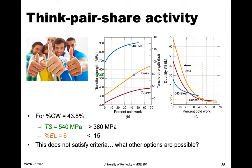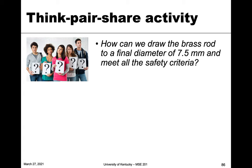We need to think about other options. How can we draw the brass rod to the final diameter — which is required — while also meeting the tensile strength and ductility criteria? Think about a revised methodology where all design criteria can be satisfied. Pause the video, work it out, then come back and we'll work through it together.